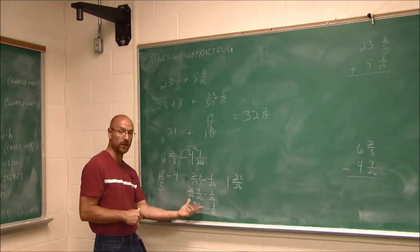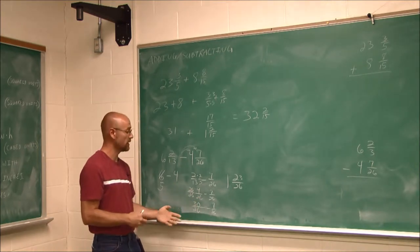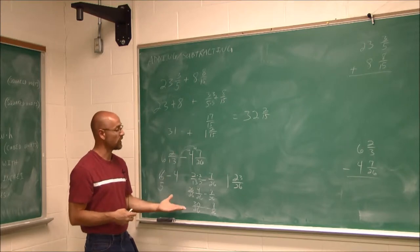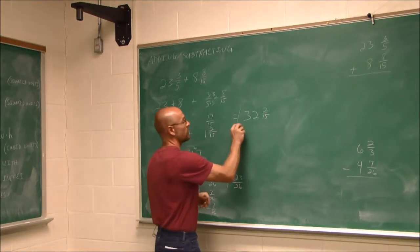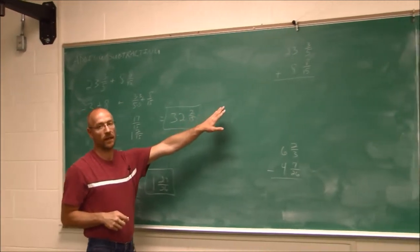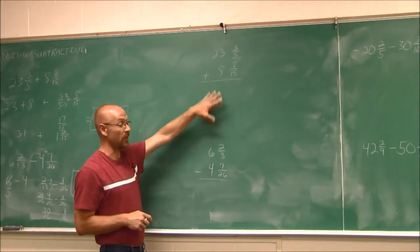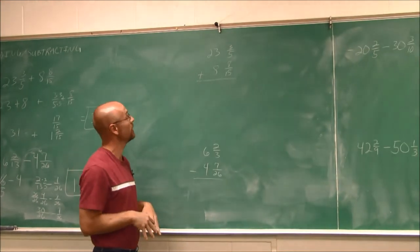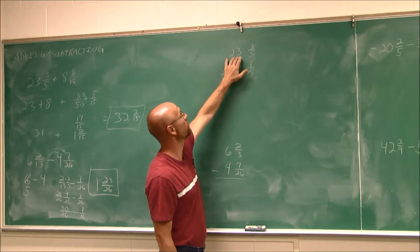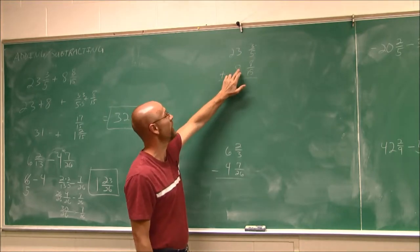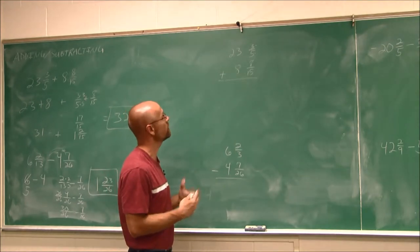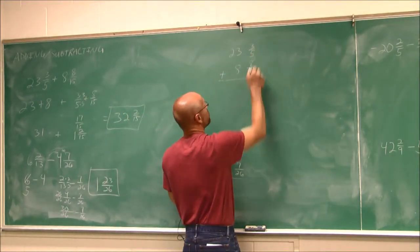Be careful with this — it's going to take some practice to be familiar with it. So we looked at these two examples and worked them horizontally. Now we're going to look at adding vertically. These are the same two problems, so one nice thing is we already know what our answer should be. We have 23 and 3/5 plus 8 and 8/15.